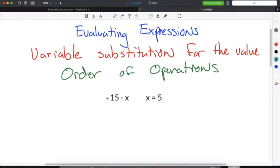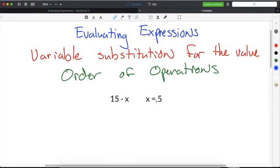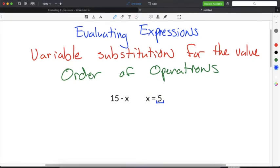In this example, the expression is 15 minus x and we know that x equals 5. We're going to take the value that represents our variable, which is 5, and substitute it in for the variable. We'll take 5 and substitute it in for x by replacing x with 5.